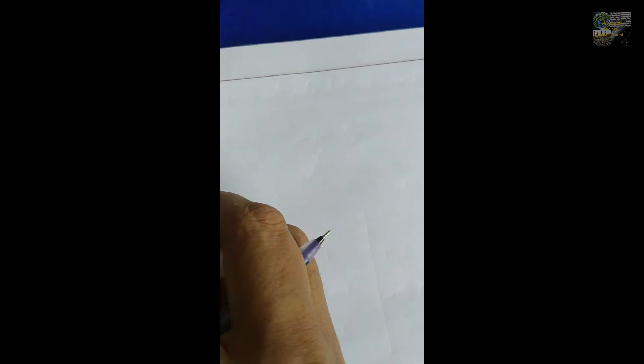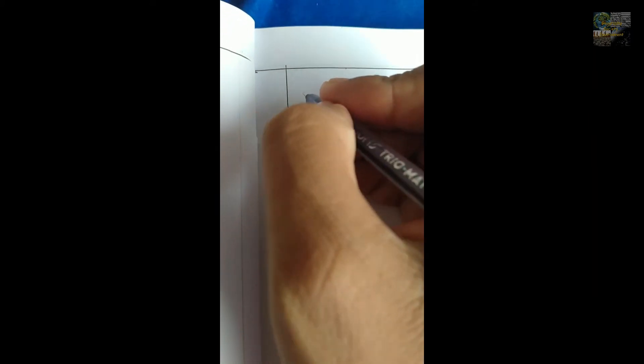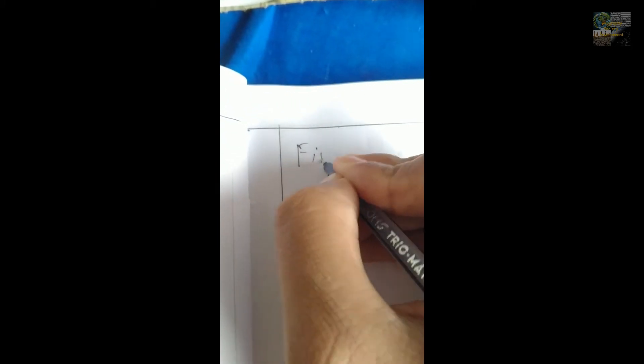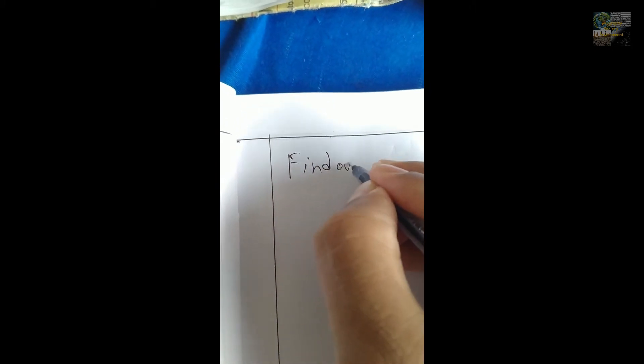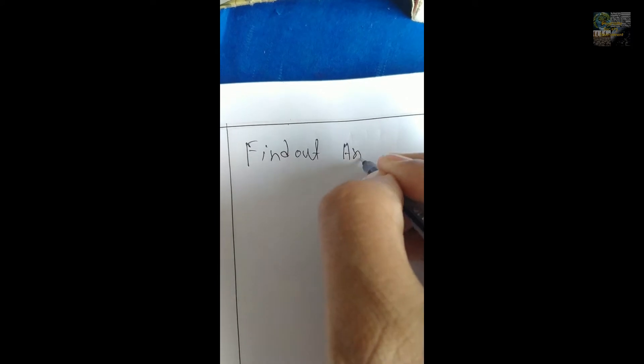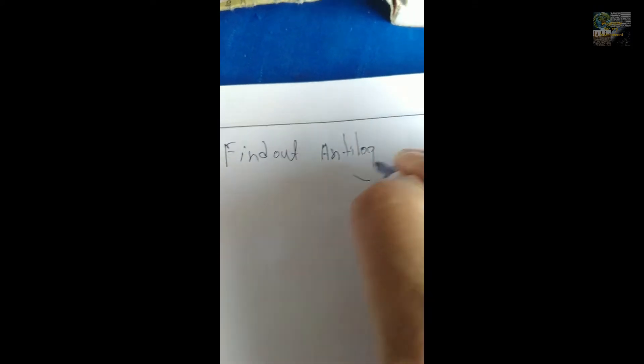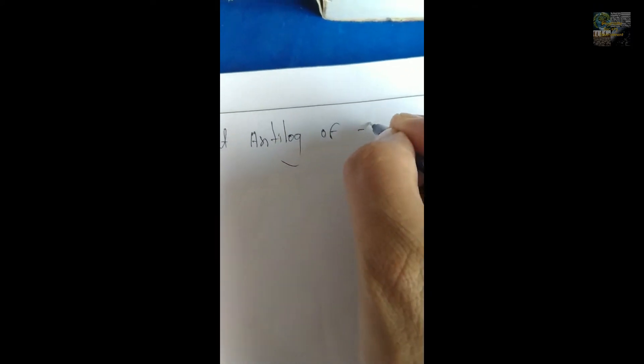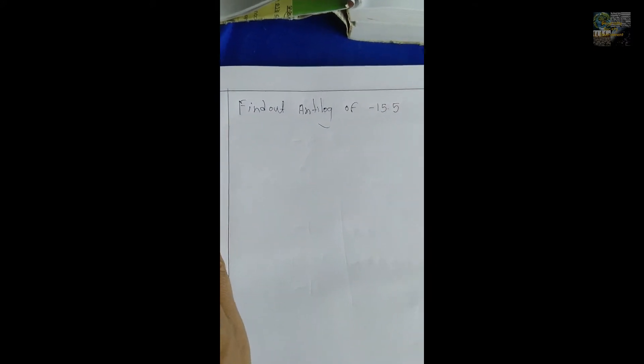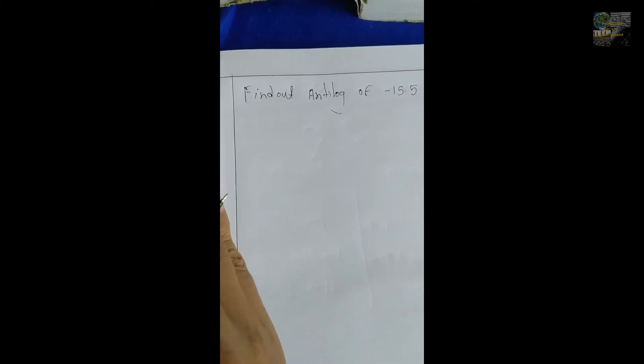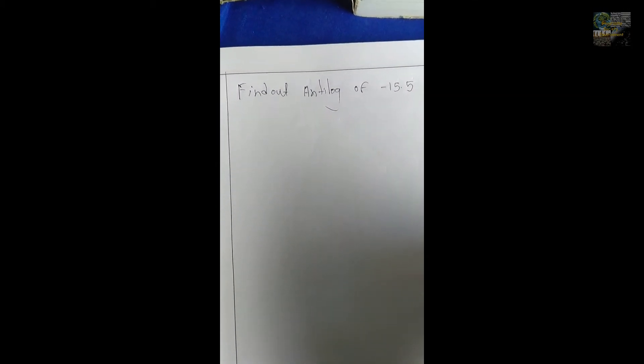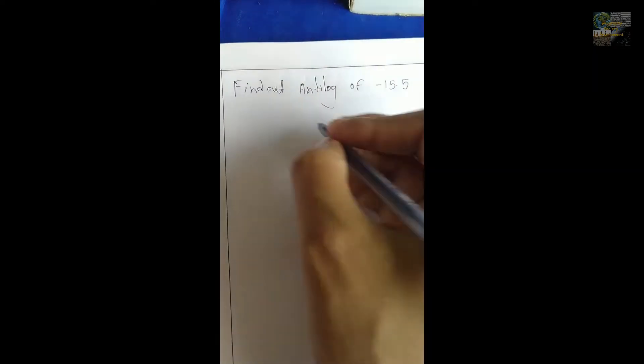I am going to find the antilog value of minus 15.5. In case of any negative value, you should follow some different method to find out the antilog.